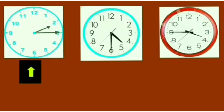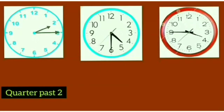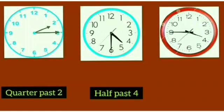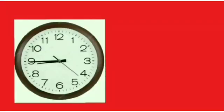Let us see some more examples of time. In this clock the time is 2:15 — for 15 minutes we use the word 'quarter past,' so the time is quarter past two. In the second clock, the hour hand is between four and five and the minute hand is on six, showing 4:30 — we use 'half past four.' The third clock is showing 3:45, so for 45 minutes we use 'quarter to,' making the time quarter to four.